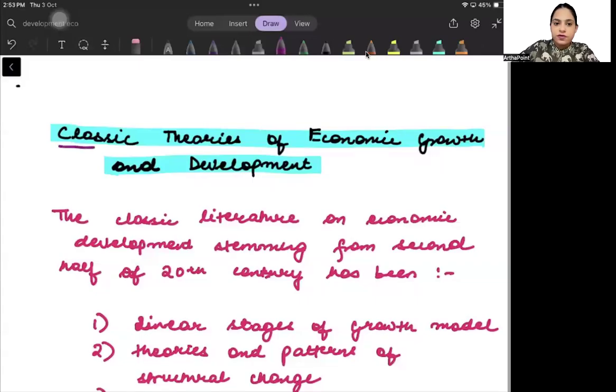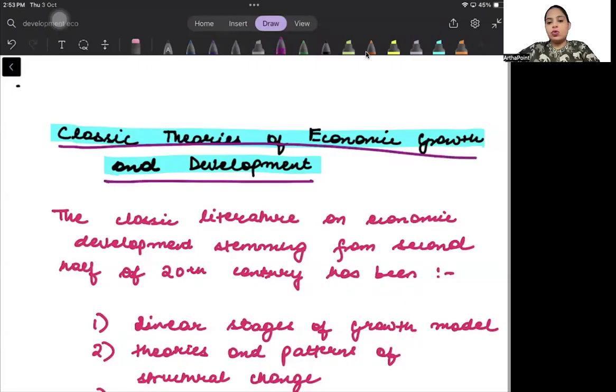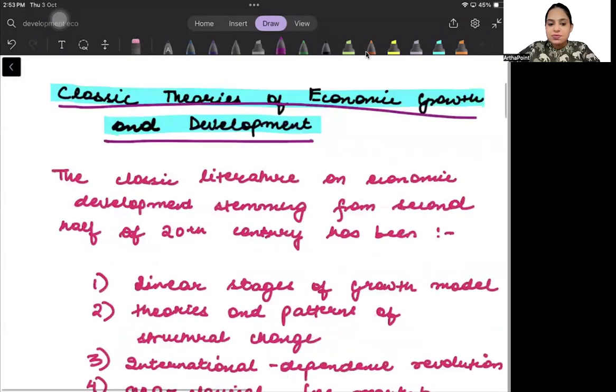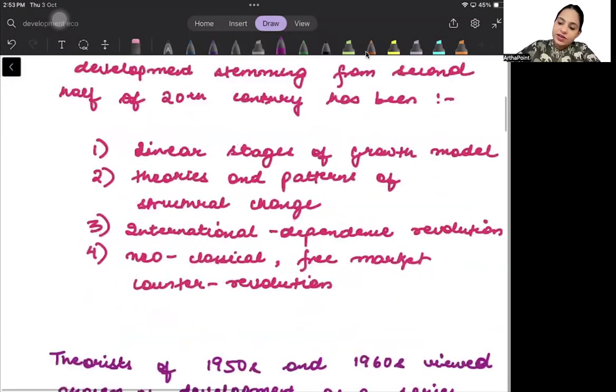Classic theories of economic growth and development. Now in today's lecture, we are going to talk about the different theories and different literature found on different models of growth theories. Broadly speaking, we can distinguish between four different kinds of growth models.